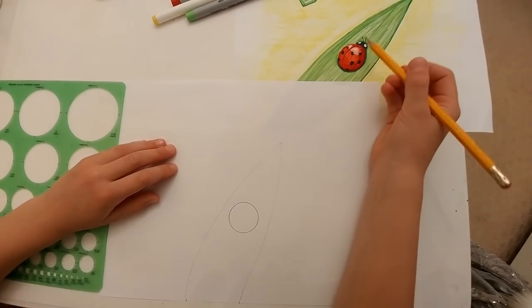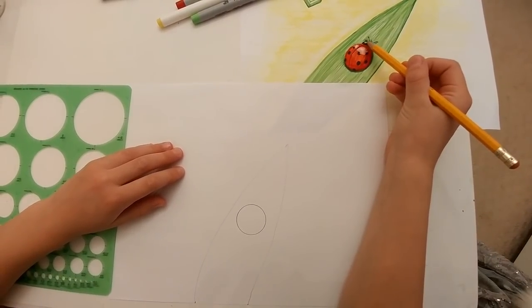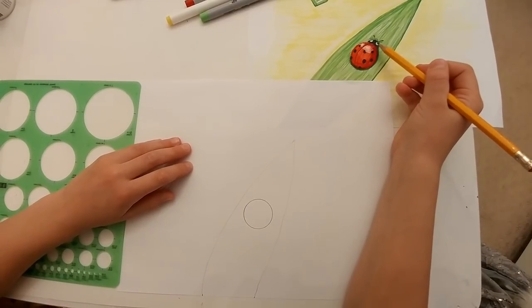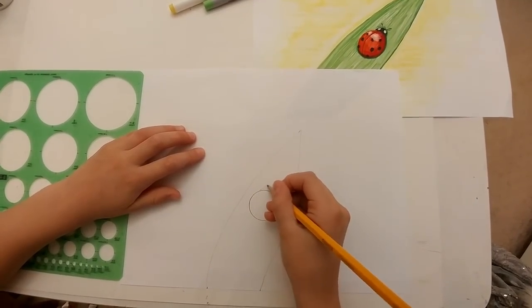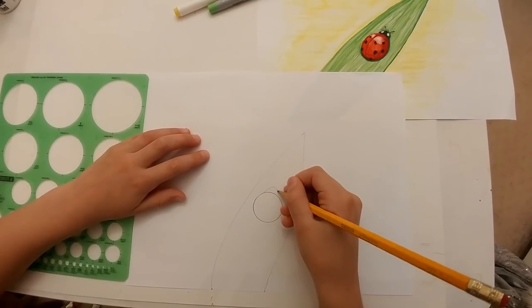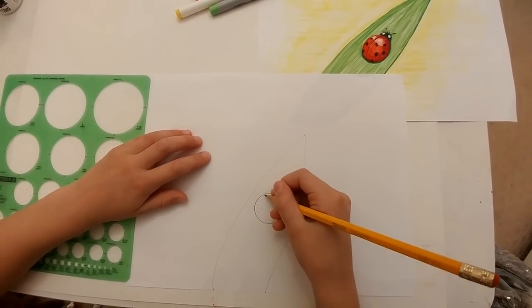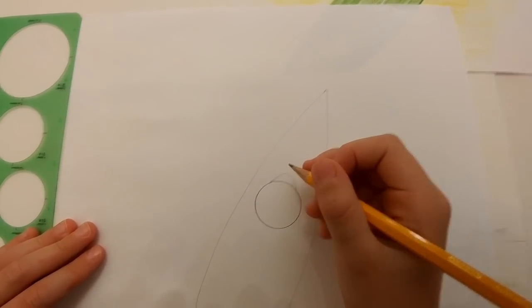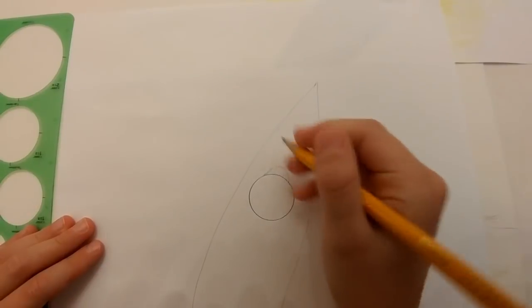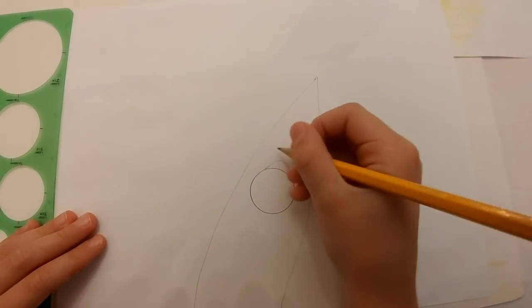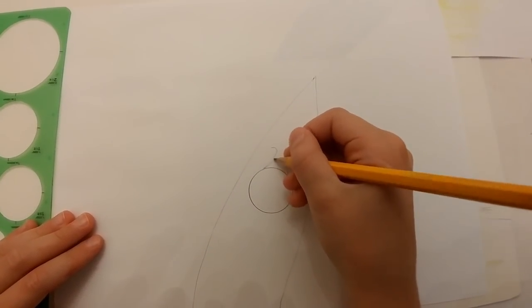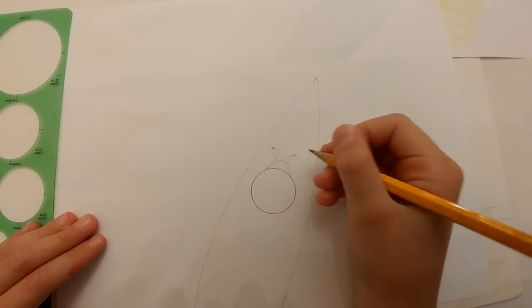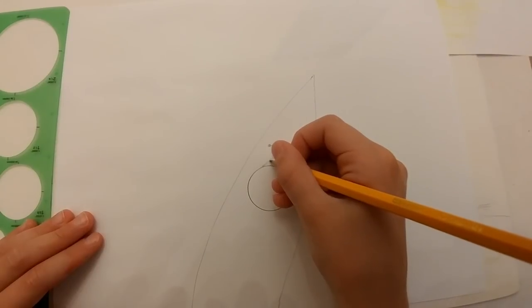Now let's draw the head. For the head, you will use an arching line to draw it. Now let's draw the antennas. Put two little markings on the antennas. Draw the eyes like half circles.